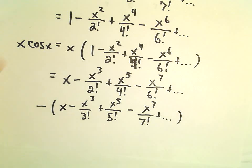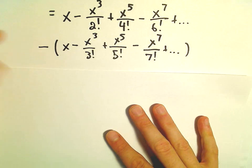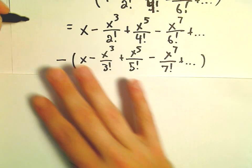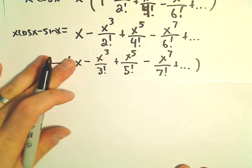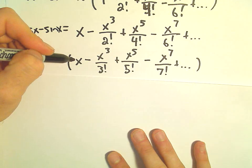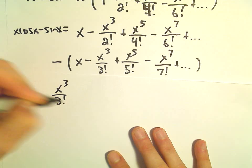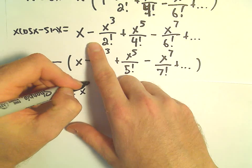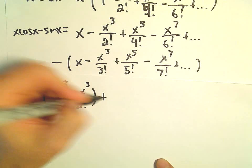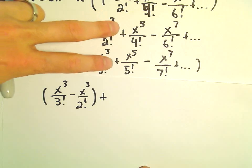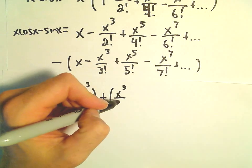This is now x cosine x minus sine x. The x minus x terms cancel. It looks like we're left with a positive x to the third over three factorial and a negative x to the third over two factorial — we could simplify this but I'll leave it for now. For the x to the fifth terms, we would have a positive x to the fifth over four factorial minus x to the fifth over five factorial.